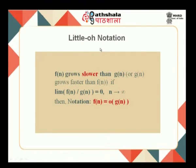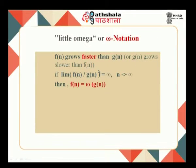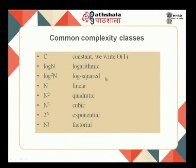We can also use little o and little omega notations. Little o means f(n) grows slower than g(n), or g(n) grows faster than f(n) — it is related to big O but with a very small constant c. Similarly, little omega means f(n) grows faster than g(n), or g(n) grows slower than f(n) — the limit is infinity. In algorithms we will encounter many complexity classes: constant, logarithmic, log squared, linear, quadratic, cubic, exponential, and factorial.